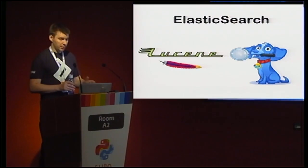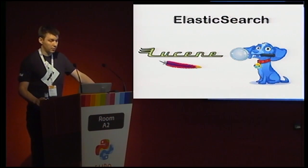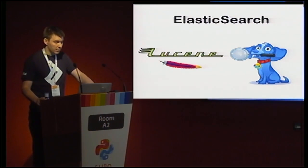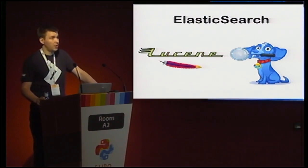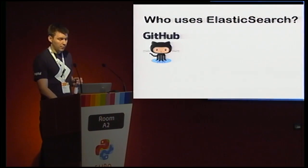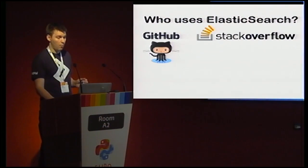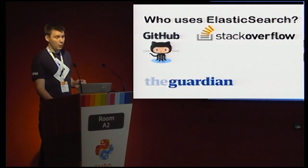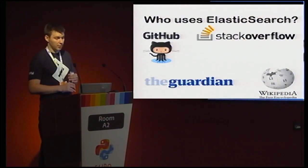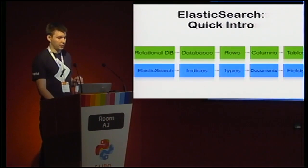Let's continue with Elasticsearch. Elasticsearch is a distributed, scalable, real-time search and analytics engine. It enables us to search, analyze, and explore data. It's based on Apache Lucene search index, which is now the most advanced and high-performance search library. Notable users include GitHub, which uses Elasticsearch to query 130 billion lines of code; Stack Overflow, which combines full-text search with geolocation; The Guardian for log parsing; Wikipedia for full-text search with highlighted data; and Datadog and others.